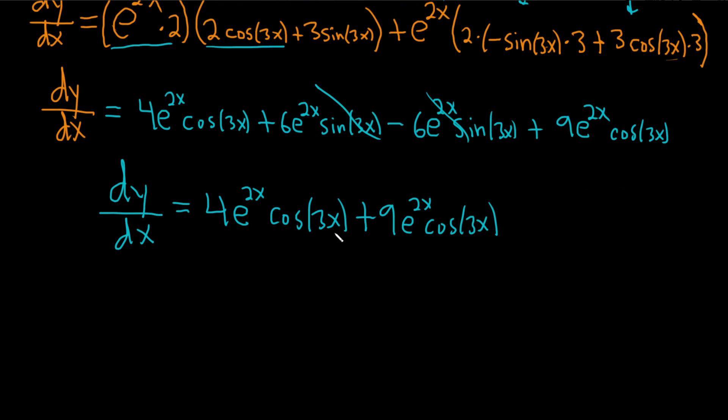We have 4 of them plus 9 of them. So dy/dx. It's going to give us 13 e to the 2x cosine 3x. And that would be the final answer.